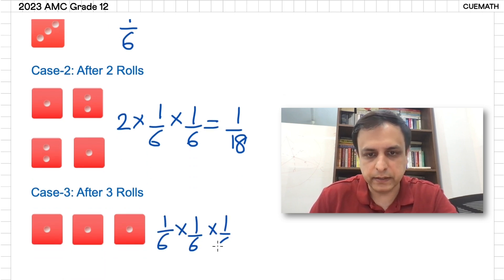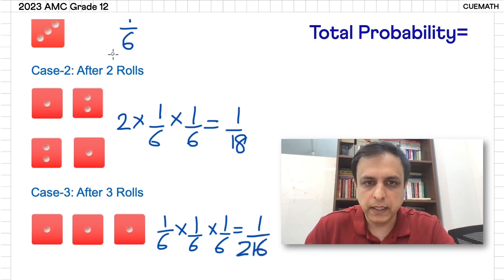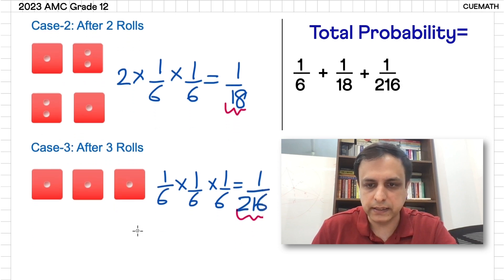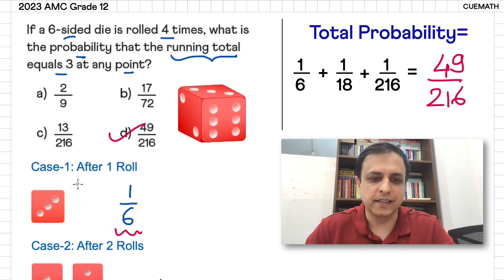And now we just add up the probabilities since all these three cases are mutually exclusive. So we get one by six plus one by eighteen plus one by two hundred and sixteen, and that equals forty-nine by two hundred and sixteen. So option D is our answer.